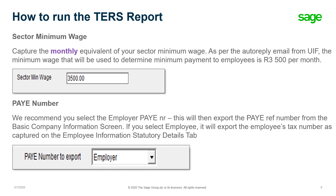The pay-as-you-earn number that you need to select to export can either be employer or employee. If you select to export the employer's pay-as-you-earn number, that will be the reference number as completed on the basic company information screen. If you select employee, it will export the employee's tax number as captured on the employee information statutory details tab.